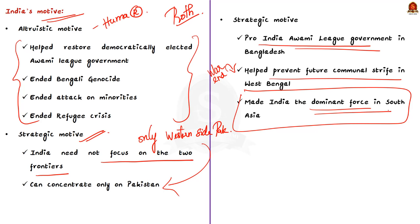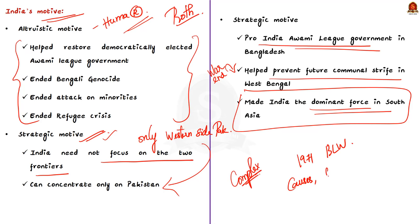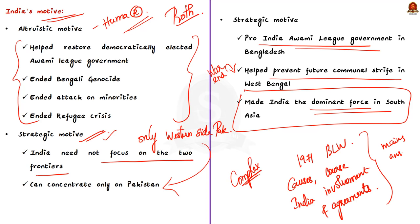In this discussion we covered all aspects of the 1971 Bangladesh Liberation War — causes of the war, course of the war, reasons for India's involvement, the Shimla Agreement and Delhi Agreement, and the strategic gains made by India. I hope this discussion was helpful and useful for your mains answers.